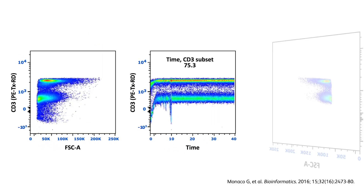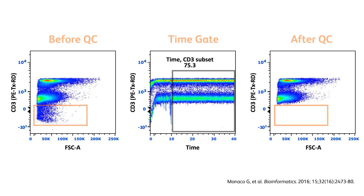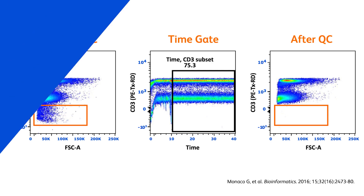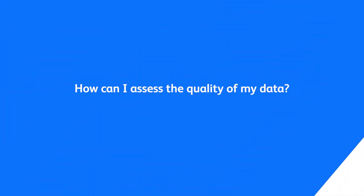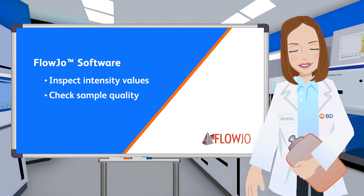Previous studies have shown that whole populations of cells can disappear from a dataset after it has been cleaned to remove anomalous events, highlighting the risk of false discoveries if data are not inspected for quality before downstream analysis. How can I assess the quality of my data?